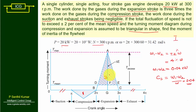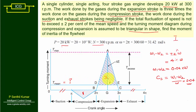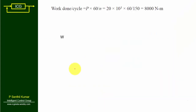Here is the turning moment diagram for this problem with all parameters marked: suction and exhaust negligible, compression and expansion triangular in shape, and expansion three times compression. We draw a constant T_mean line, and the hatched area above T_mean represents ΔE, because ΔE equals I·ω²·CS, from which we can find I.